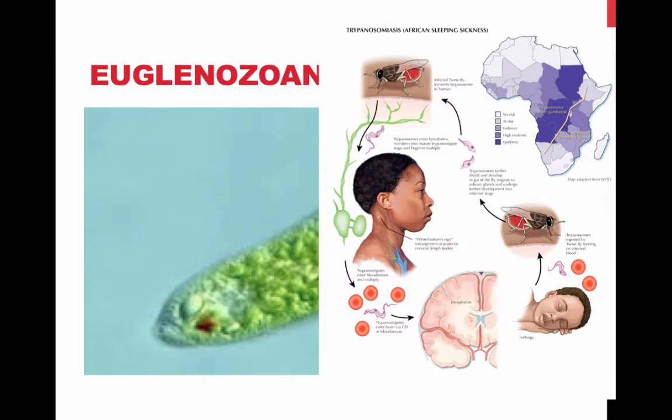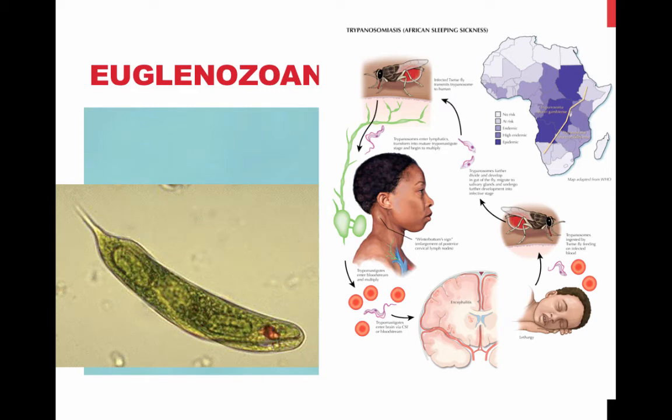Kinetoplastids are famous for Trypanosoma, which is a parasite that causes African sleeping sickness in humans. It is carried by the tsetse fly. Euglenoids can be both autotrophic and heterotrophic, which is a remarkable adaptation for a single-celled protist.